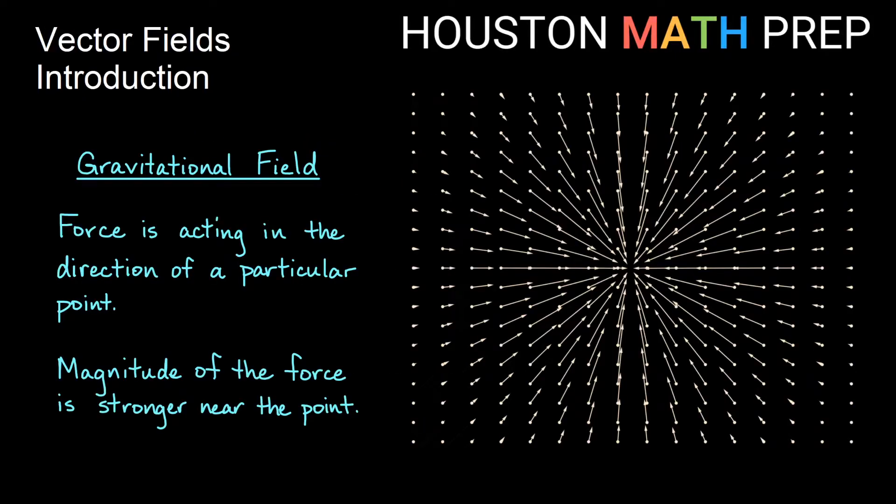If we just look at one of these examples, a gravitational field where force is acting in a particular direction toward a point, the magnitude of the force is also stronger near the point. So you can think about if there's some sort of a planet or a really dense object right here, if I'm far away I will be pulled toward that point but not very quickly, and the closer I am to that object the more strong the pull will be toward that point.